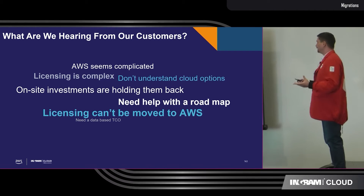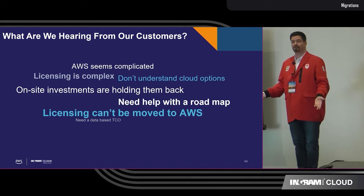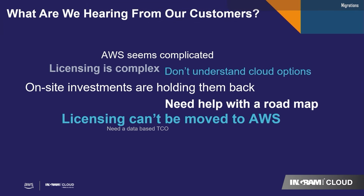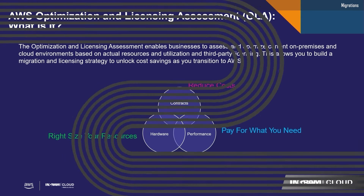When we're talking about AWS — I'm Dave Rizbois, I'm at AWS — what is AWS hearing from our customers? AWS seems complicated. Licensing is complex. On-site investments are holding me back. We need help with the roadmap. And anybody ever get that last one — licenses can't be moved to AWS? Well, they can. AWS has a dedicated team that works with Microsoft workloads and especially around licensing, so if you have any problems they'll be able to work with you on that.